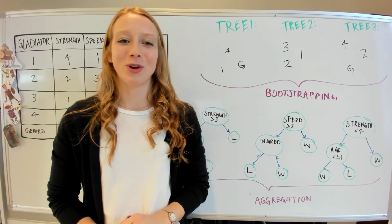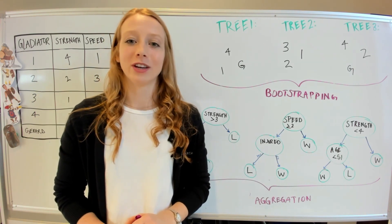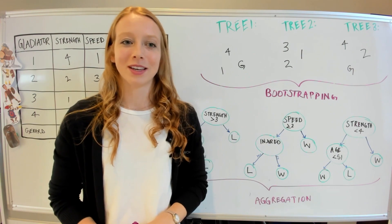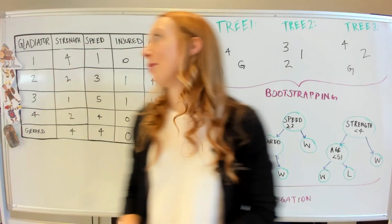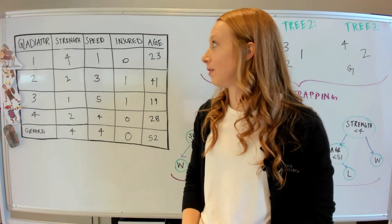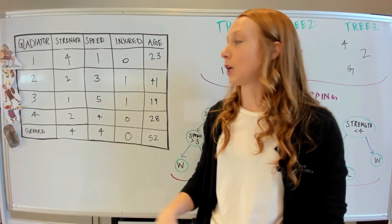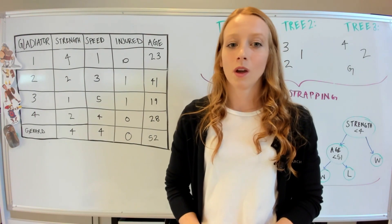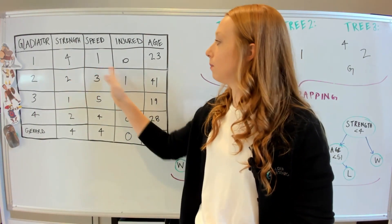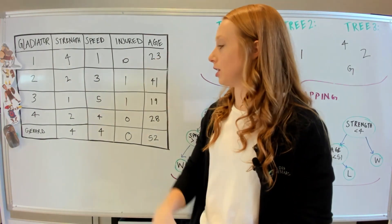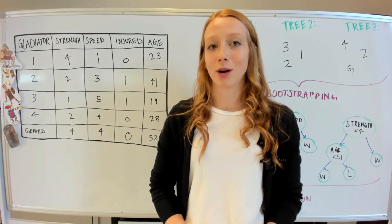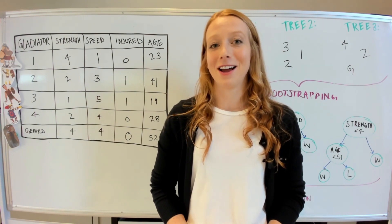In fact, I'm going to show you how to build a random forest so that you can determine if you have what it takes to win the gladiator games. Let me first introduce you to the lineup. Here we have five gladiators, including Gerard Butler. And with each gladiator are specific characteristics and their score. We're going to be evaluating gladiators based on their strength, their speed, if they're injured or not, and what their age is.